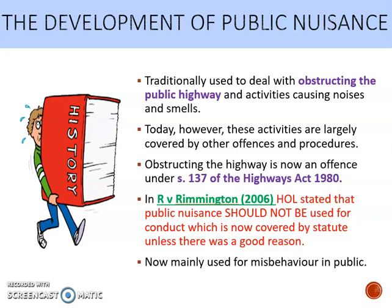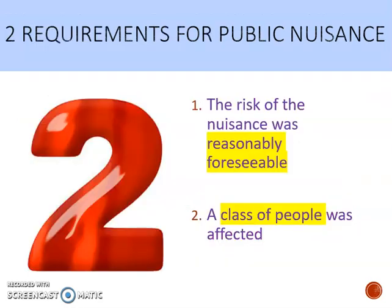Nowadays public nuisance is mainly used for misbehaviour in public — big parties, hanging off bridges, that sort of thing. There are two requirements for proving public nuisance: firstly, the risk of the nuisance must be reasonably foreseeable, and secondly, there must be a class of people affected.